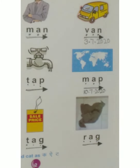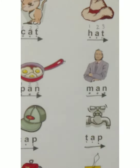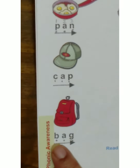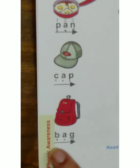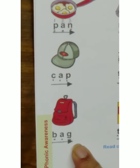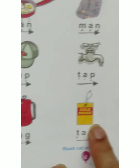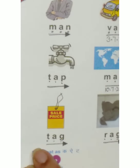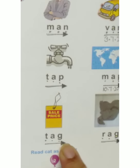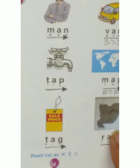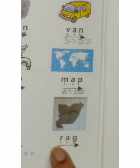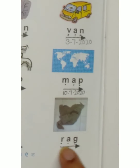Now we are going to do the reading again. First picture — B, A, G, bag. B, A, G, bag. Second — T, AG, tag. T, AG, tag. Third picture — R, A, G, rag. R, A, G, rag.